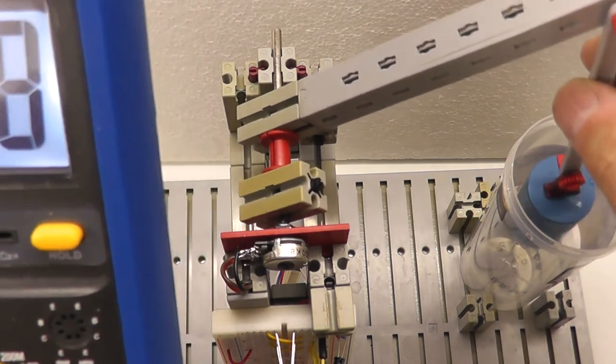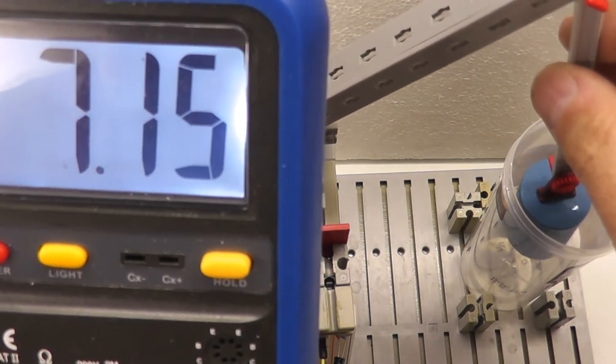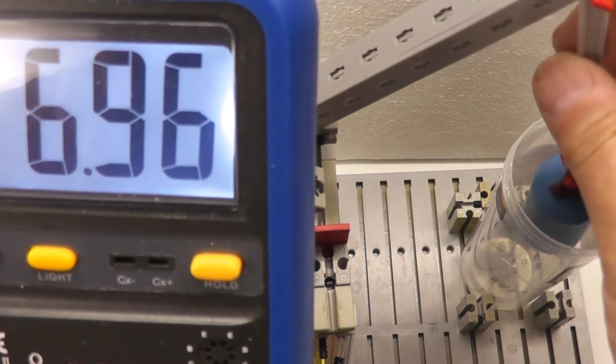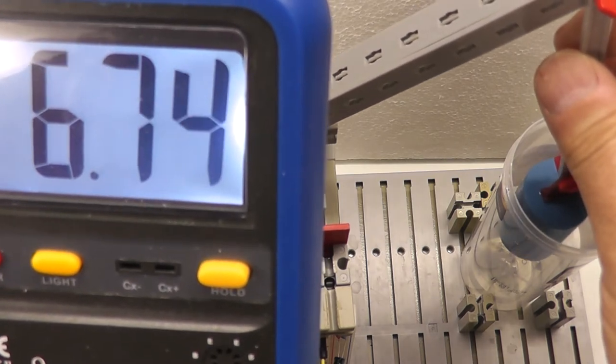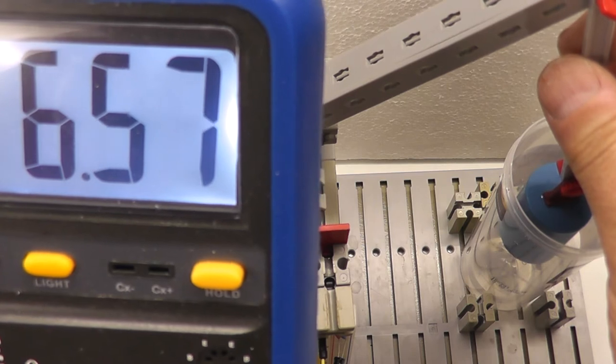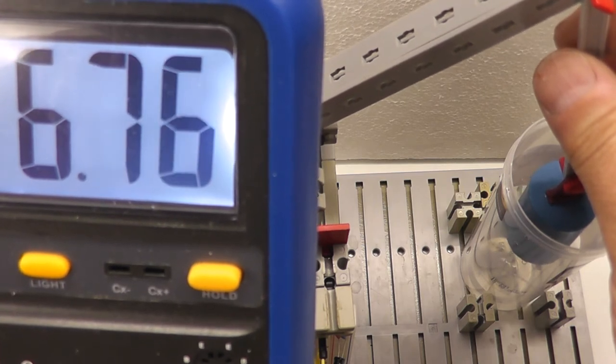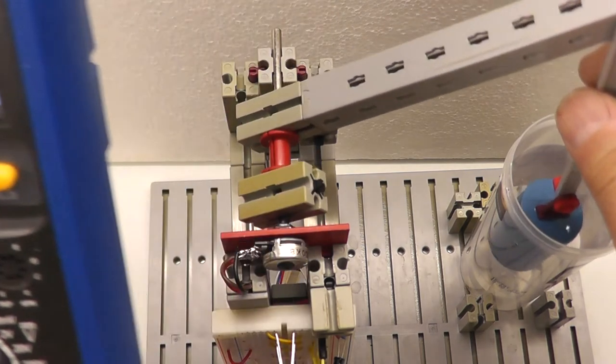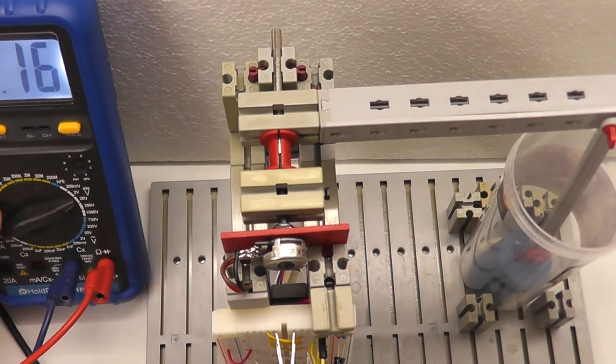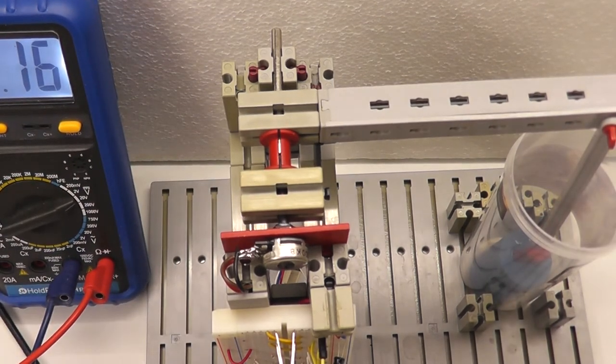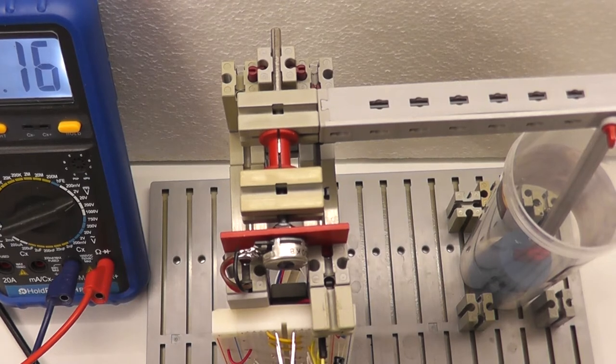If I move this arm, you see the maximum is about 6.5 volts in this position. So now I have my reference minimum and maximum for the UAA180.